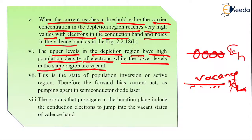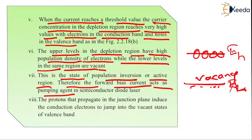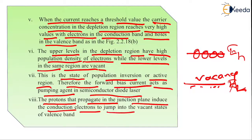This is the state of population inversion. The forward bias current acts as a pumping agent in the semiconductor diode laser — pumping is achieved simply by forward biasing of the p-n junction. The photons that propagate in the junction plane induce the conduction electrons to jump into the vacant states of the valence band.